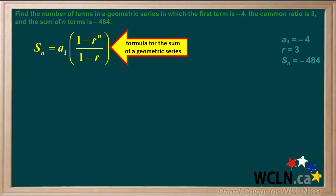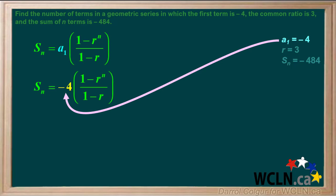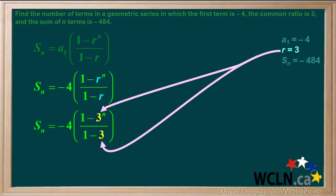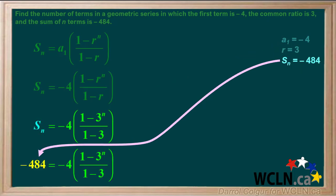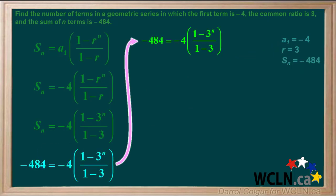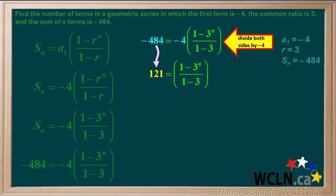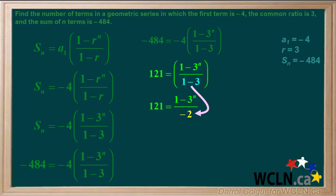To find n, we'll start with the formula for the sum of a geometric series. We'll put in negative 4 for a1, 3 for each r in the formula, and negative 484 for Sn. Dividing both sides by negative 4 gives us 121 equals 1 minus 3 to the power n, all over 1 minus 3. Since 1 minus 3 equals negative 2, we have that result in the denominator.